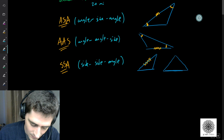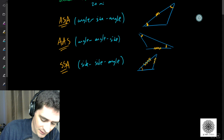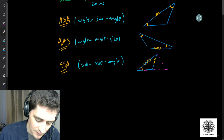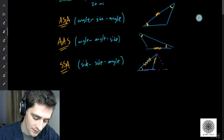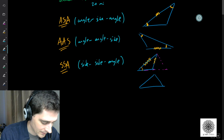Here we have this angle, that side, and that side. The problem is this may not create a unique triangle — with the same side length and the same angle, you could have a separate triangle. This is the ambiguous case of side-side-angle, and we'll try to clarify when that happens.